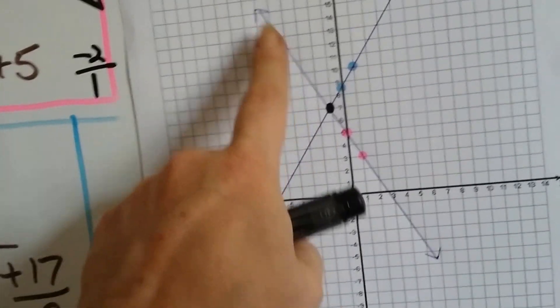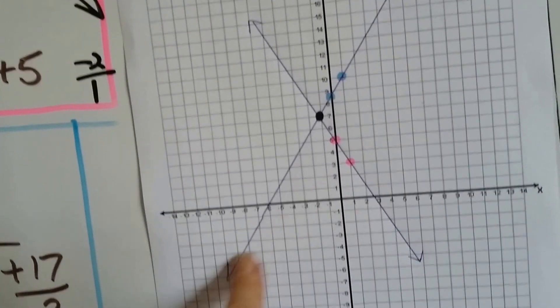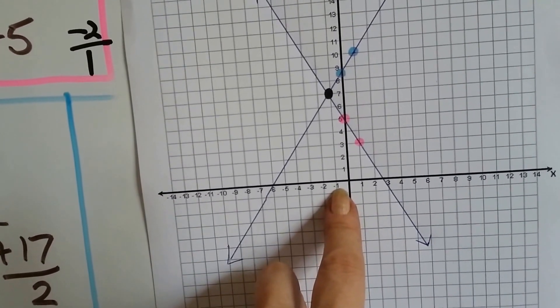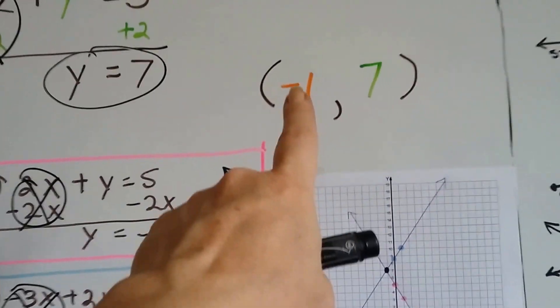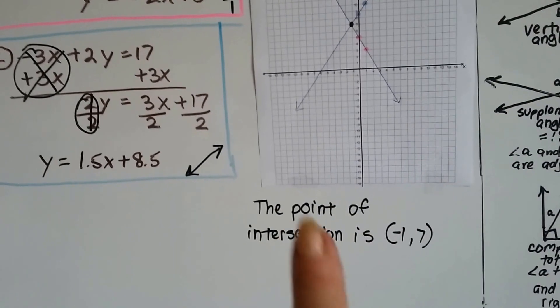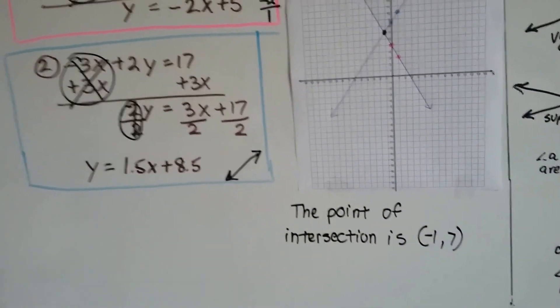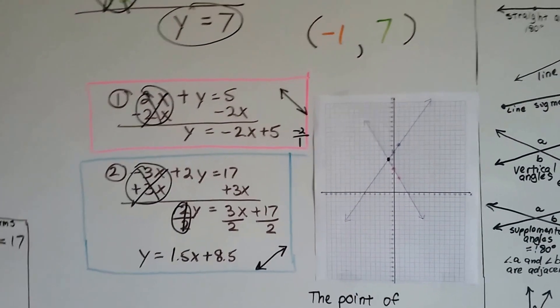And where did this line cross with this line? Where did they intersect? At negative 1 on the x and 7 on the y. Negative 1 on the x and 7 on the y. Look, it worked. The point of intersection is negative 1, 7. That means we did it correctly. So that's how we check by graphing.